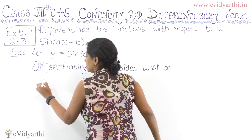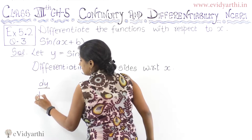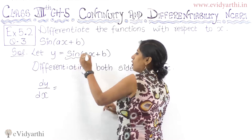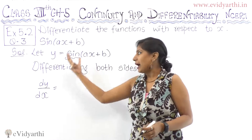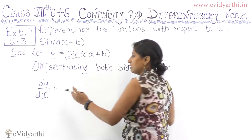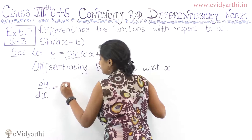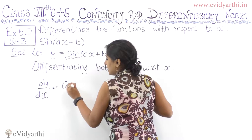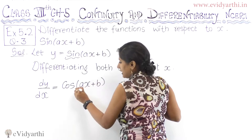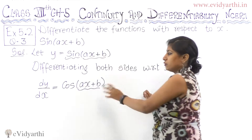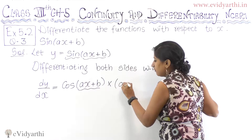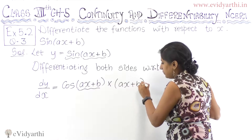What do we get? dy/dx is equal to — sin(ax+b) is a composition function, so we differentiate from outside. The derivative of sin is cos, so we get cos(ax + b), into the differentiation of ax + b.